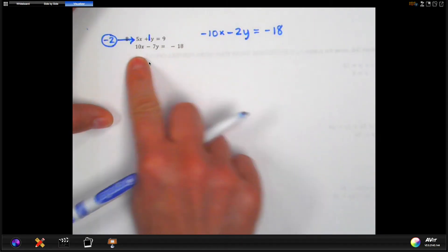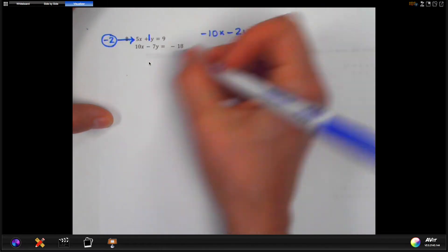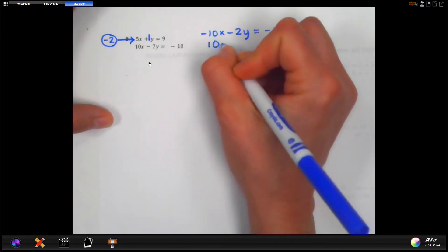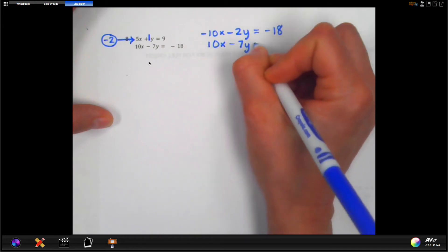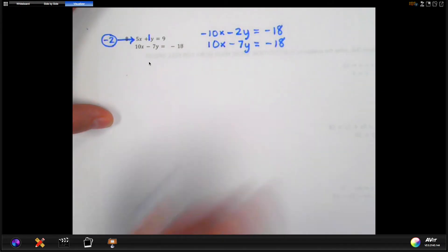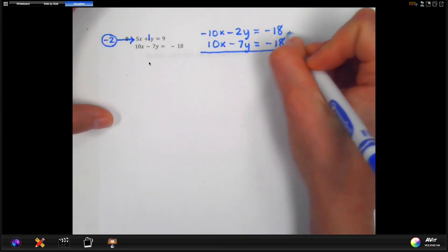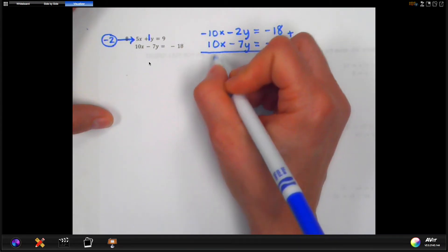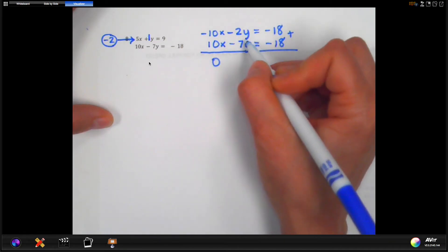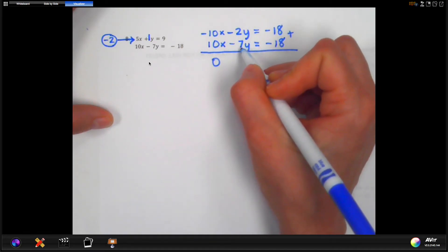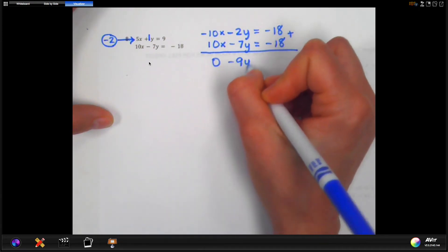Now the second equation, I don't need to change that. So I'm going to just rewrite that as is. 10x minus 7y equal negative 18. Okay, now that I have exact opposites, I can add. So negative 10x plus 10x is 0. That's what I needed. Negative 2y plus negative 7y is going to give me negative 9y.